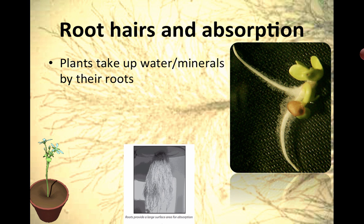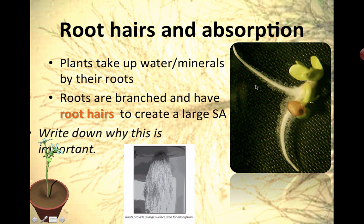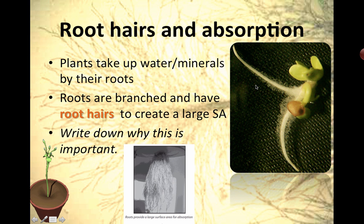We start down at the roots. The roots are pretty hairy looking, and all these little hairs and extensions and branches are to increase the surface area. Water is taken up through a lot of these root hairs, but minerals are also taken up through here as well. The root hairs basically create a large surface area to make absorption more efficient.